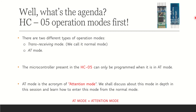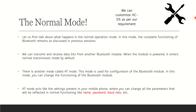The microcontroller present in HC-05 can only be programmed when it goes to AT mode. The HC-05 bluetooth module has a microcontroller inside, and you can program and customize it only when it enters AT mode. AT stands for attention — AT mode is nothing but attention mode, and we have to enter from normal mode into attention mode in order to program the bluetooth module.